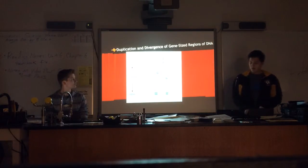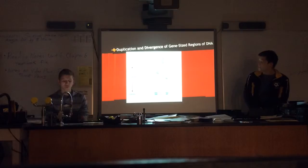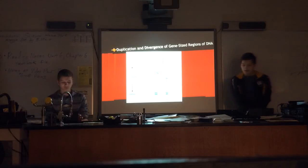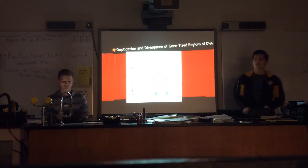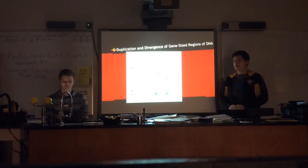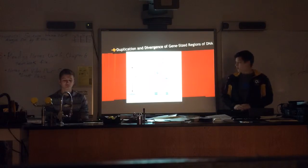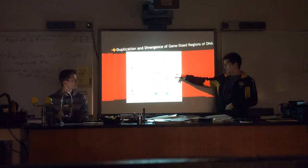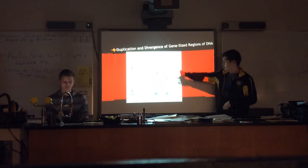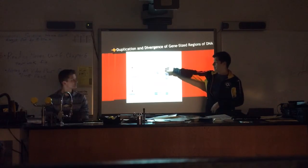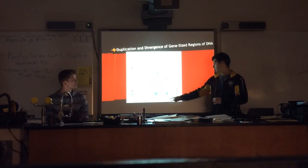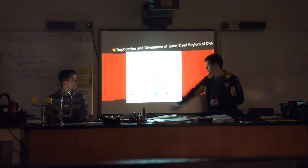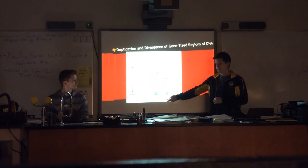Here's another example of crossing over, but in this case, unequal crossing over can result in one chromosome with a deletion and another with a duplication of a particular gene. In the picture, there are misaligned chromosomes — the blue band is representative of a gene — and one chromatid ends up with two copies of the gene and the other has zero.